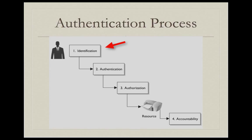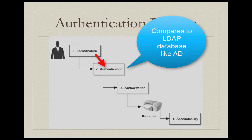Once the identification has been created, the user then presents that identification to a system or network he or she wants to access. This is called the authentication process. The authentication process then takes that user ID and password and compares it to what it has in what is usually an LDAP, or Lightweight Data Access Protocol, like Windows domain controllers. If the identification information matches what the system has on file, then the user is authenticated. The authentication process is verifying that the person attempting to access resources is who they claim to be.